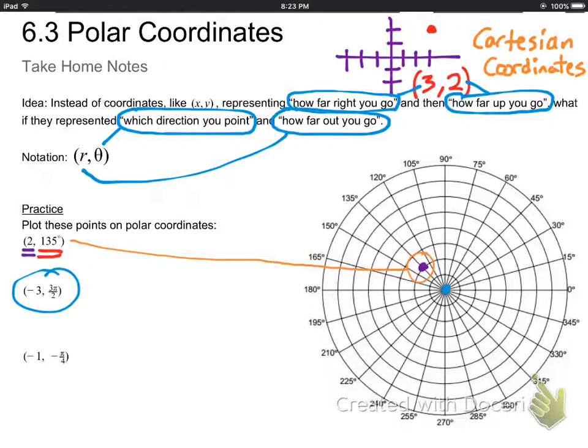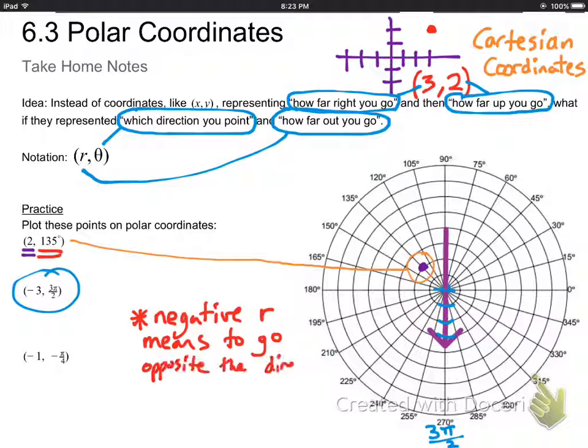The numbers can be funny, so let's look at the next one. Let's say I've got negative 3 comma 3 pi over 2. Well, 3 pi over 2 is the angle, since we write that second, so you want to turn around and face 270 degrees, see down there, labeled it 3 pi over 2.